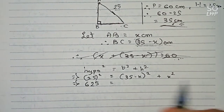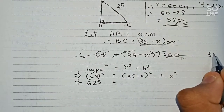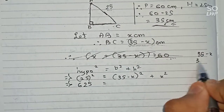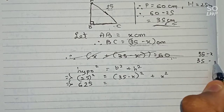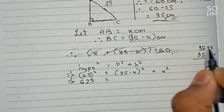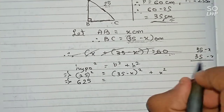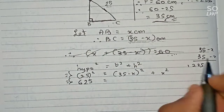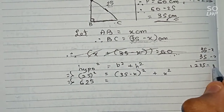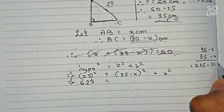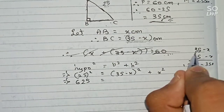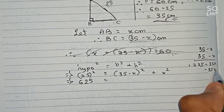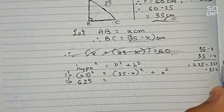So 625 equals (35 minus x) multiplied by (35 minus x). Expanding: 35 times 35 equals 1225, minus 35x, minus 35x again.